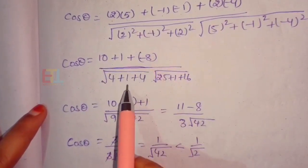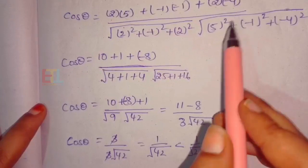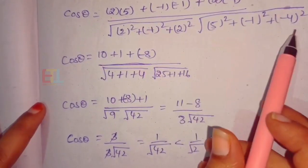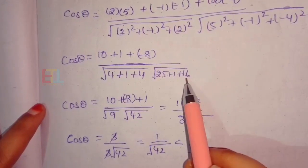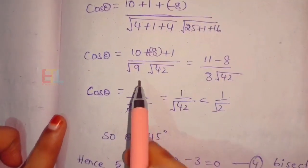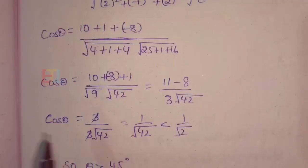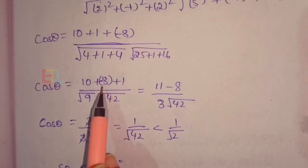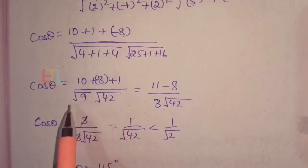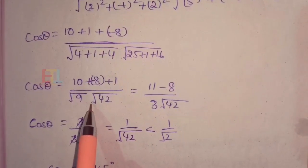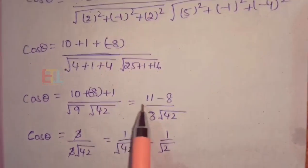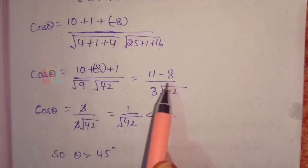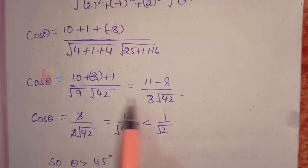Simplifying: cos theta equals (10 + 1 − 8) divided by (root 9 times root 42) equals 3 divided by (3 times root 42). Cancelling 3 from numerator and denominator, we get cos theta equals 1 divided by root 42.